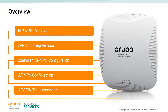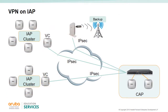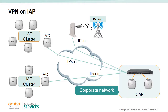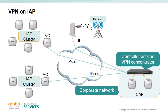IAPs have their own virtual controller architecture, therefore they do not need a controller for monitoring or configuration — the virtual controller handles these processes. The IAP cluster may be a totally enclosed network or a branch office that needs access to the corporate network. A controller is required for terminating VPN tunnels from the IAP network at a branch location to the corporate network. The Aruba controller acts as a VPN concentrator, not as a controller for the IAPs.